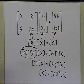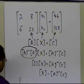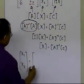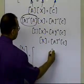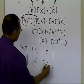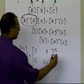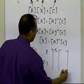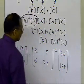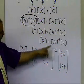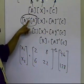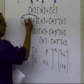So if I know the inverse of the A matrix, I can just multiply it by my right-hand side vector c to find the solution. That means [x1; x2] equals the inverse of [2, 8; 6, 22] times [46; 128]. The inverse of a matrix is denoted A raised to the power of minus 1.